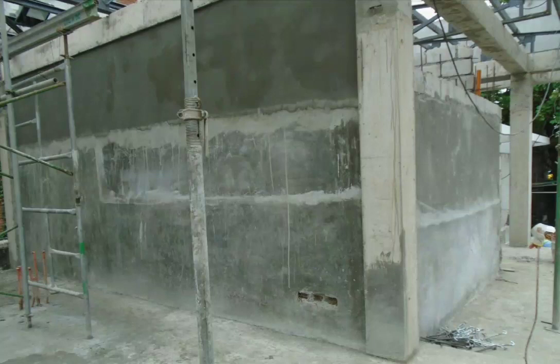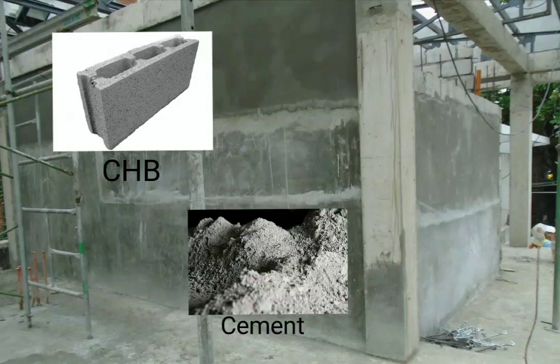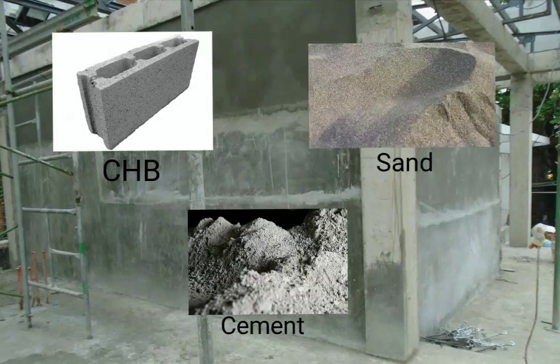In this video, you will be able to learn how to calculate the quantities needed to build a masonry wall. Aside from reinforcing bars, you will need concrete hollow blocks, cement, and sand to perform the job.